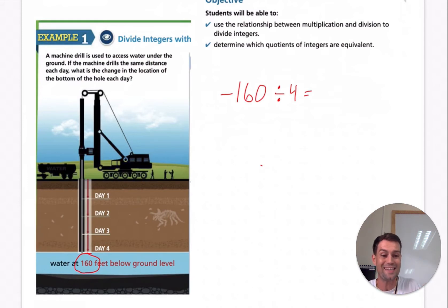Well, we do the same as what is 160 divided by four? Well, we know 16 divided by four is four. So 160 divided by four is 40. Now, this is the key takeaway for today. The same rules for multiplying integers applies for dividing. So since we have a negative here and a positive, a negative divided by a positive gives us a negative. So it is negative 40.